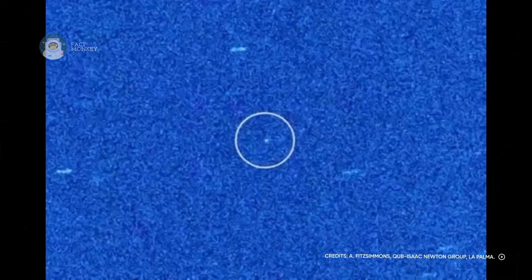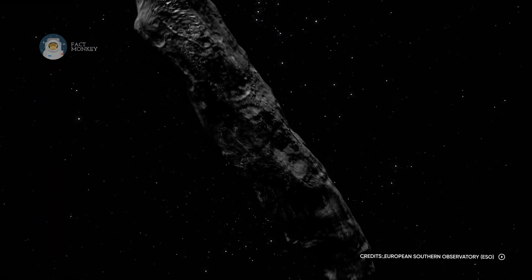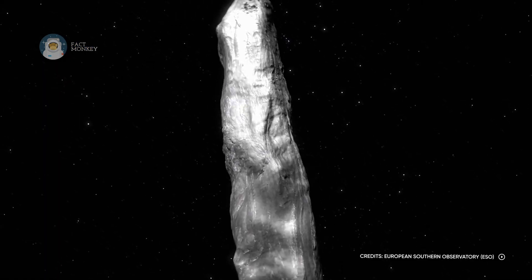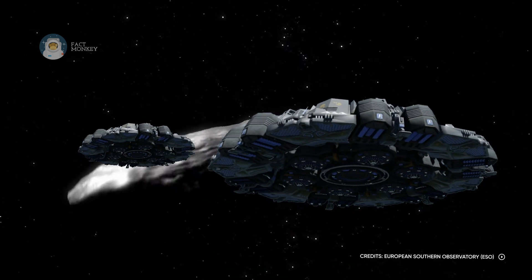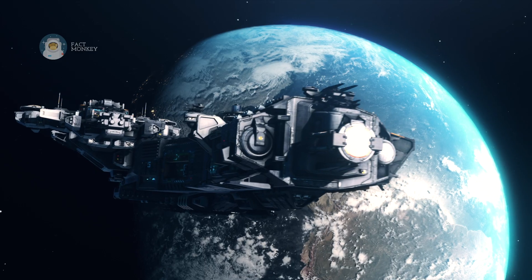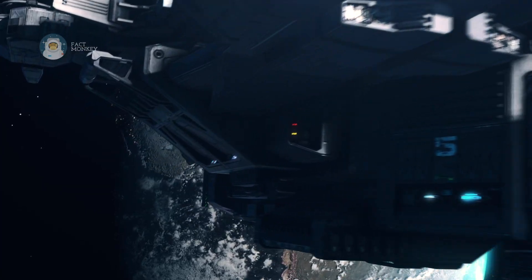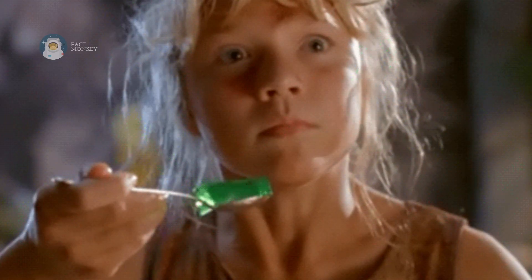The Oumuamua is so unlike anything humans have seen before that people started speculating that it might actually be alien technology. Upon observation, it has been found that this cigar-shaped object accelerates the same way it would if something was controlling it or pushing on it, which only fueled the theory that it's being propelled by an alien machine.